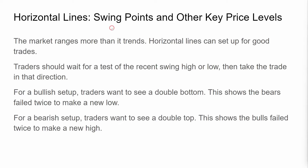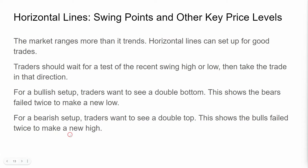Horizontal lines, swing points, and other key price levels. The market ranges more than it trends. Horizontal lines can set up for good trades. Traders should wait for a test of the recent swing high or low, then take the trade in that direction. For a bullish setup, traders want to see a double bottom — this shows the bears have failed twice to make a new low. For a bear setup, traders want to see a double top — this shows the bulls failed twice to make a new high.